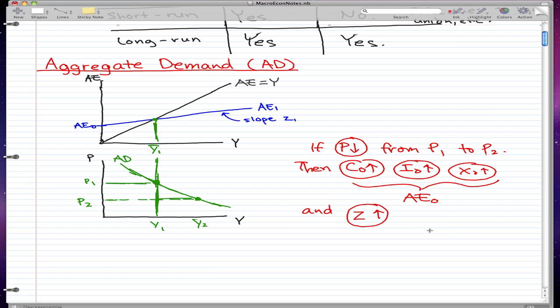We know that Z is equal to b times (1 - t) minus m.